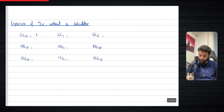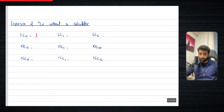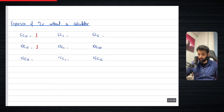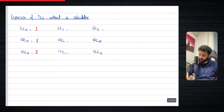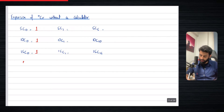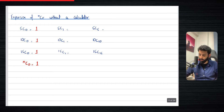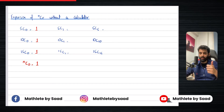If you work out 5C0, you'll notice that the answer is 1. Then work out 10C0 — the answer is 1 also. Then 15C0 — the answer is 1 again. So that means, doesn't matter what you have before C, as long as it's C0, so you could have NC0, the answer is always going to be equal to 1. That's fact number one.